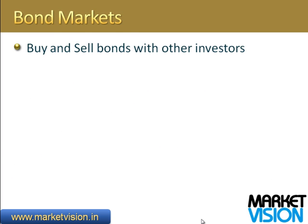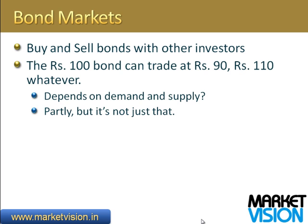Bond markets are simply places where you buy and sell bonds, trading with other investors. A 100 rupee bond may be trading at 90 rupees, 110 rupees, whatever. What makes the price change? Does it depend entirely on demand and supply? Partly, but it's not just that. To understand what impacts the price, you have to understand the concept of yield.